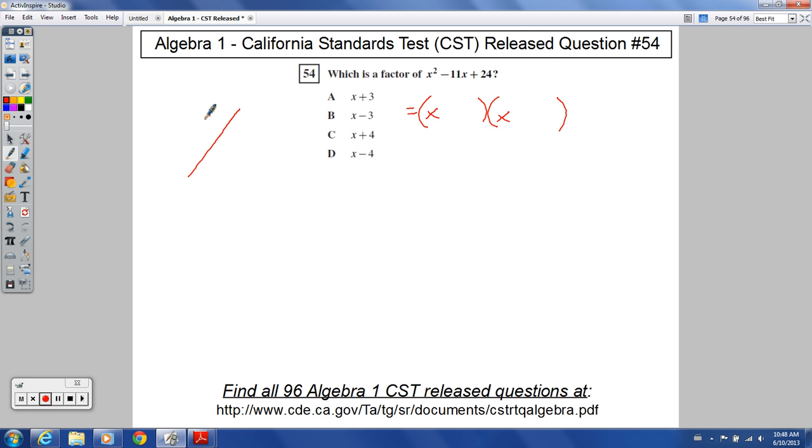So we just did something in question 53 like this. I called it the magic x. And we can do the same thing here. So anytime you have a one in front of the, or an invisible one in front of the first term squared piece, you can use this magic x. And it should work every time as long as it's factorable.